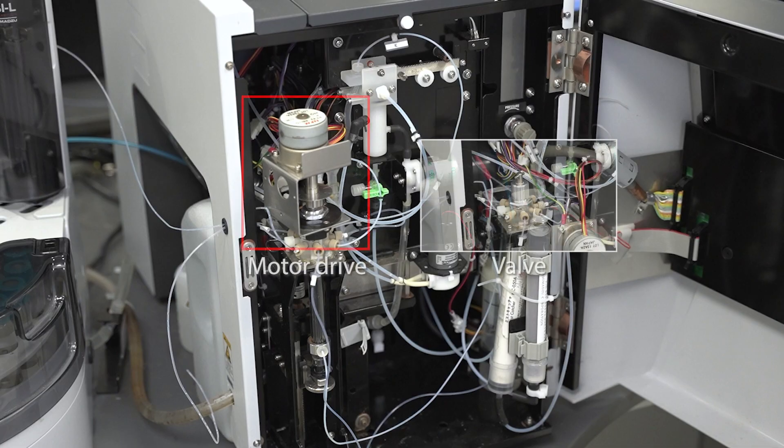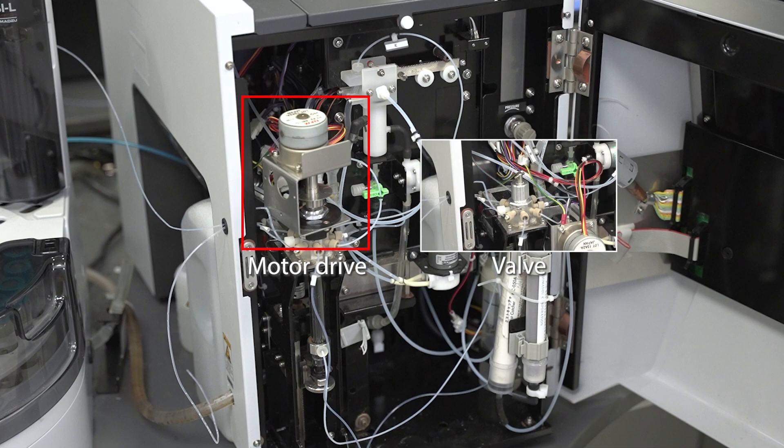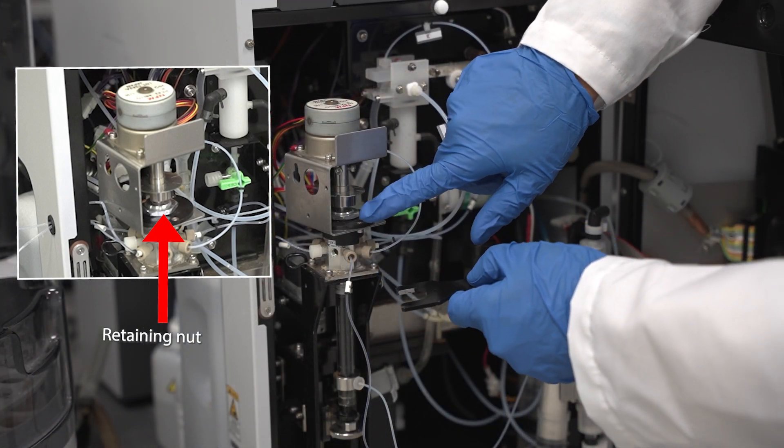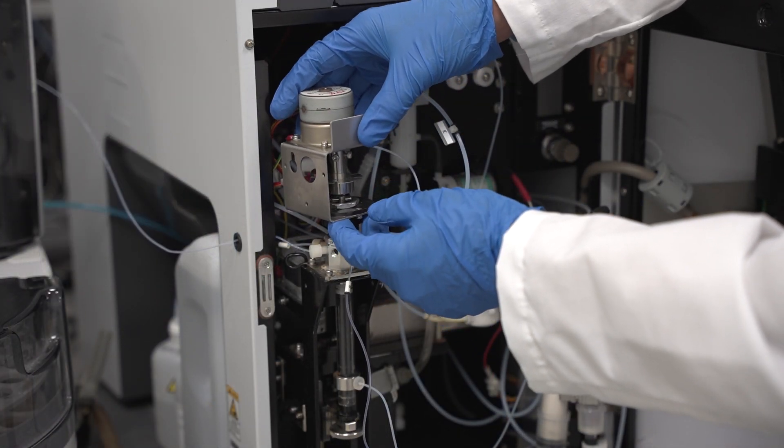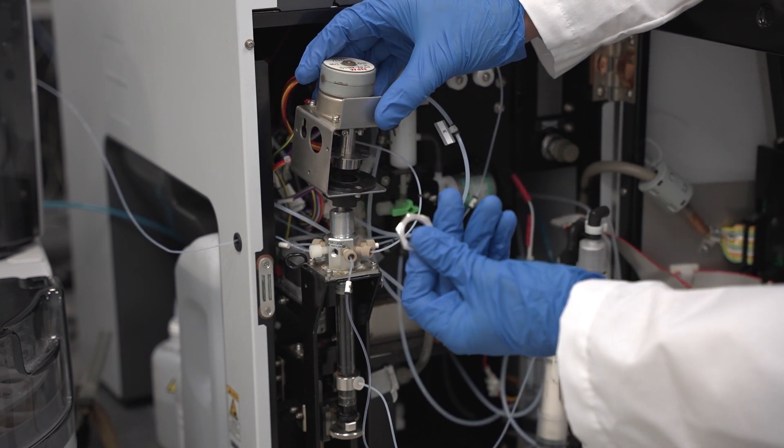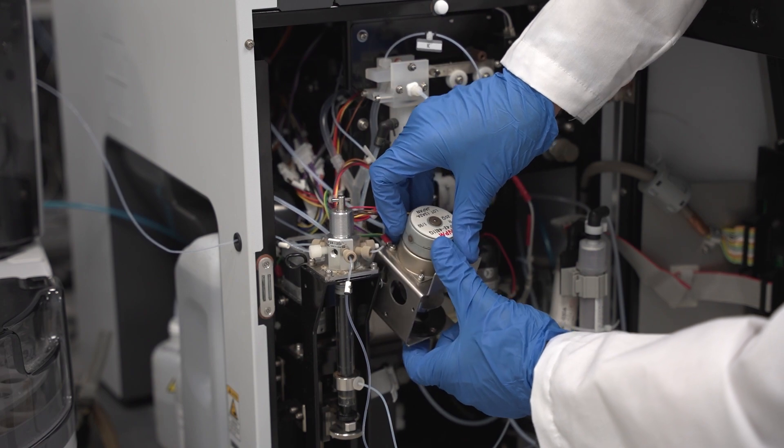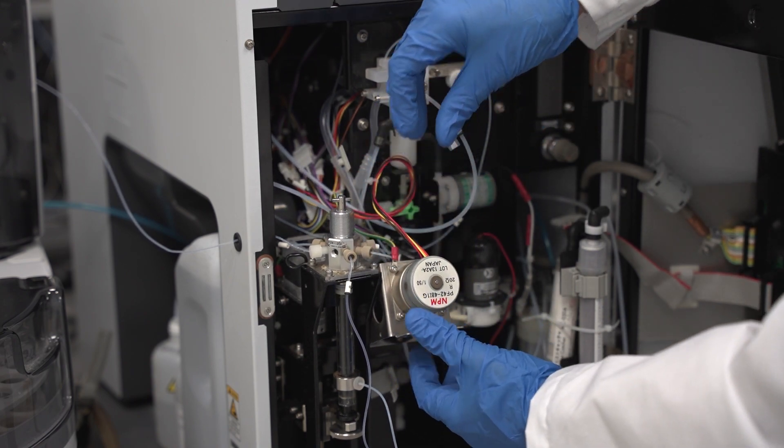To remove the rotor, you will need to take the valve apart by disconnecting the motor drive from the valve. Use the larger side of the black wrench to loosen the large retaining nut. Lift the motor drive assembly up and off the valve. Use the slot on the side to hang the assembly on the screw located on the side of the syringe drive assembly.